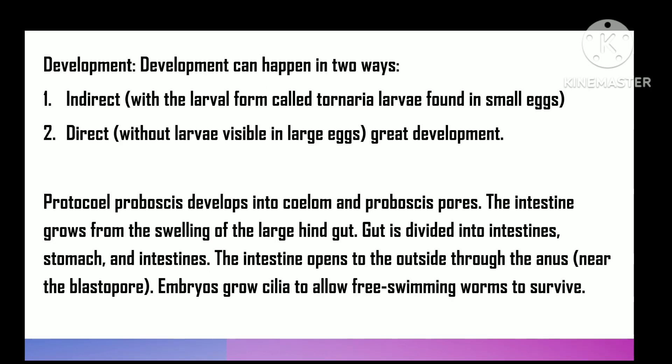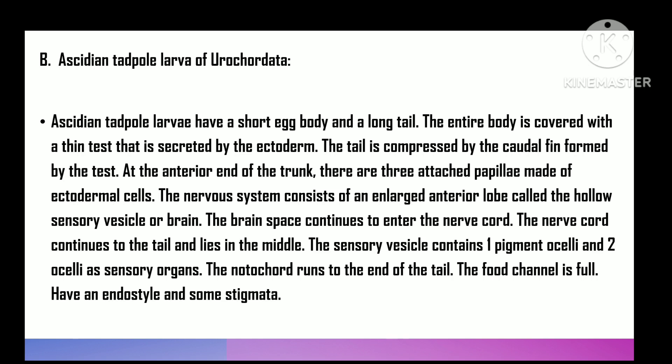Development may occur in two ways: indirect and direct. Indirect development involves a larval form called tornaria larva, seen in small-sized eggs. Direct development occurs without a larva and is seen in larger eggs. In larval development, the protocoel develops into the proboscis coelom and proboscis pore. The collar and trunk develop from evagination of the hind gut. The gut differentiates into oesophagus, stomach, and intestine. The intestine opens to the outside through the anus. The embryo develops cilia to lead a free-swimming larval life.